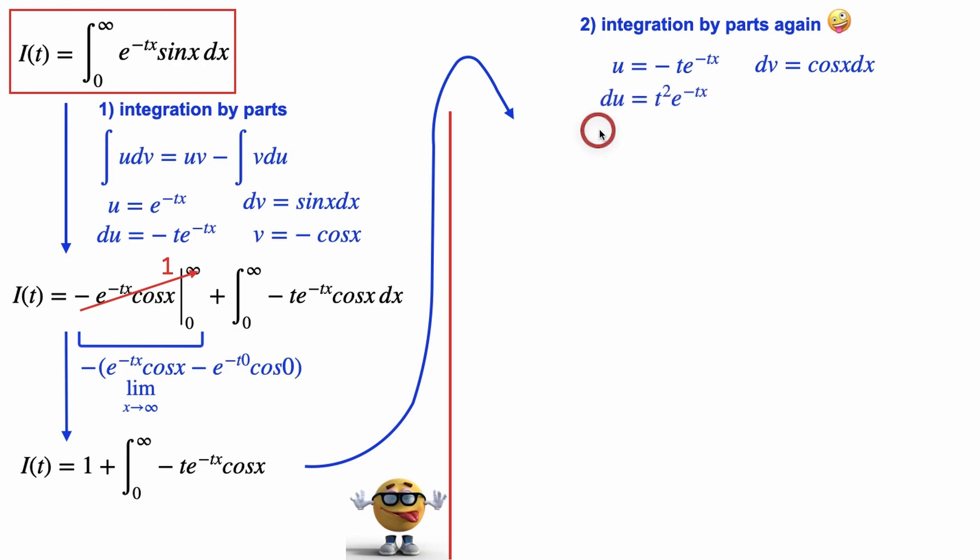We're going to take the derivative to get du equals t squared e to the negative tx, because the negatives cancel, and integrate dv to get v equals sine of x. And if we plug this into our integration by parts formula, we get the integral that we're trying to solve for equals 1. So this 1 is this 1 right here.